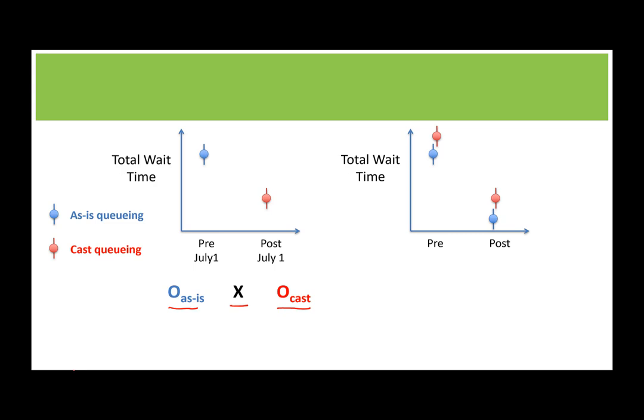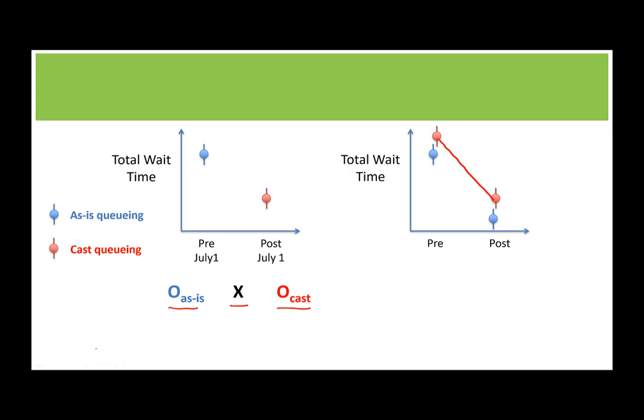A way to mitigate this would be to measure CAS queuing both before and after the implementation of CAS queuing. What if we split up our total entry gates — for some of them we did CAS queuing and some of them we did the normal queuing, and we ran them all at the same time? Then we could look at the difference from before to after for CAS queuing and compare that to the difference from before to after for the normal queuing. In this case, if this is what our data looked like, it appears the CAS queuing doesn't have a big impact at all — every line is going down in the park.